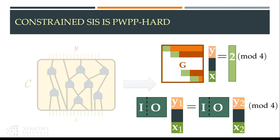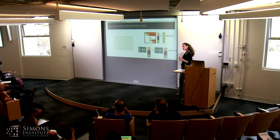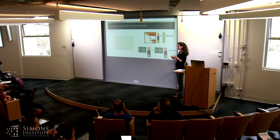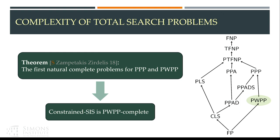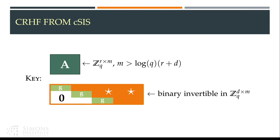The benefit of using the more general matrix A is to show the connection to collision-resistant hash functions: for every problem in weak PPP, we can describe a collision-resistant hash function. Using constrained SIS, we can describe a hash function conjectured to be collision-resistant, with key being random matrix A and binary invertible matrix G sampled by choosing elements over the diagonal. The input has size log q to the N, then we use the lemma to extend X to a solution of GX = 0 mod q, and output A times X mod q.